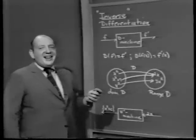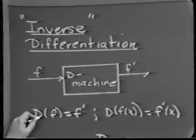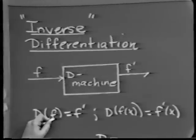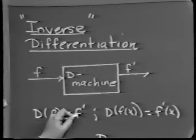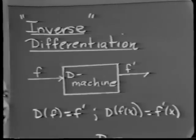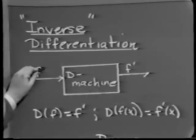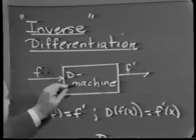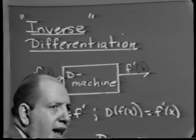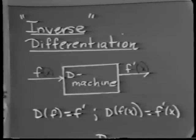Using our typical notation, the D machine takes a differentiable function as its input and produces the derivative f prime as output. We're used to talking about the derivative with respect to a given variable — unless otherwise specified, the variable is x. So the input is f of x and the output is f prime of x.